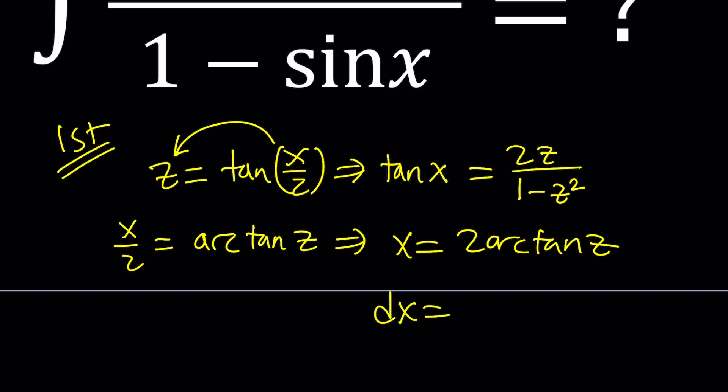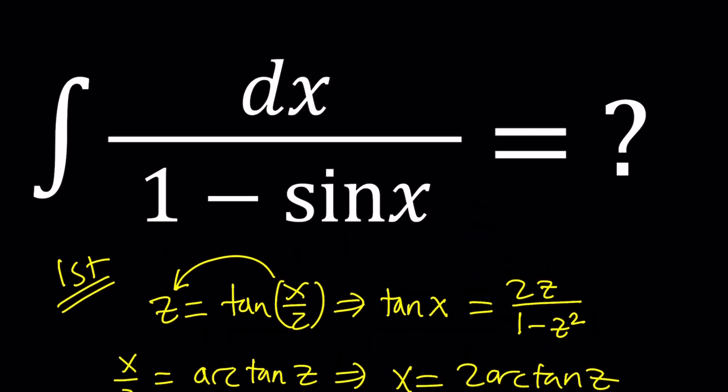And dx from here becomes, you've got to differentiate arctangent z, which is 1 over 1 plus z squared. And then just multiply by dz, so it becomes 2 dz over 1 plus z squared. So that's dx, that's tangent x, but we do have sin x in our equation. So we need to find that.